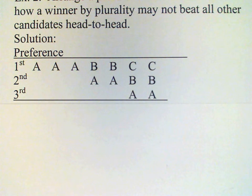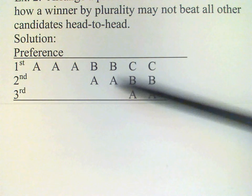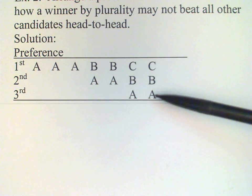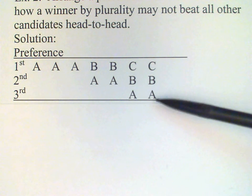But it's easy to arrange the preference table so that B will beat every other candidate head-to-head. And arranging the A's and B's in this way, we see that the voters prefer B to A, four to three.